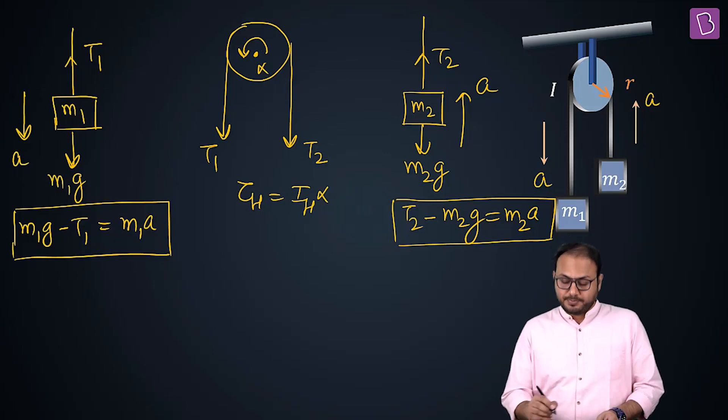And MG is passing through what? The hinge point. That's why its torque is zero.